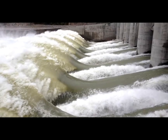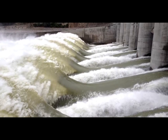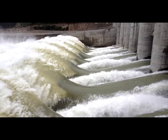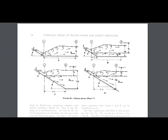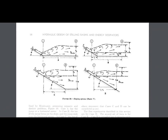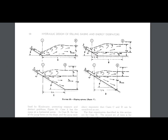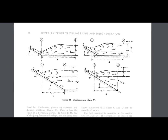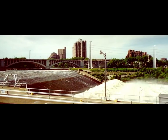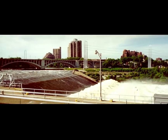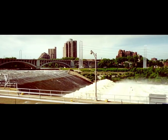So most hydraulic structures will be equipped with some form of energy dissipator on the downstream end to reduce the velocity of flow and protect against erosion. There are all kinds of hydraulic energy dissipators, but for large structures like spillways, the most common types rely on the formation of a hydraulic jump. Because a hydraulic jump causes so much turbulence, it is able to effectively dissipate hydraulic energy as heat. So many energy dissipators — also called stilling basins — are designed to force a hydraulic jump to occur.